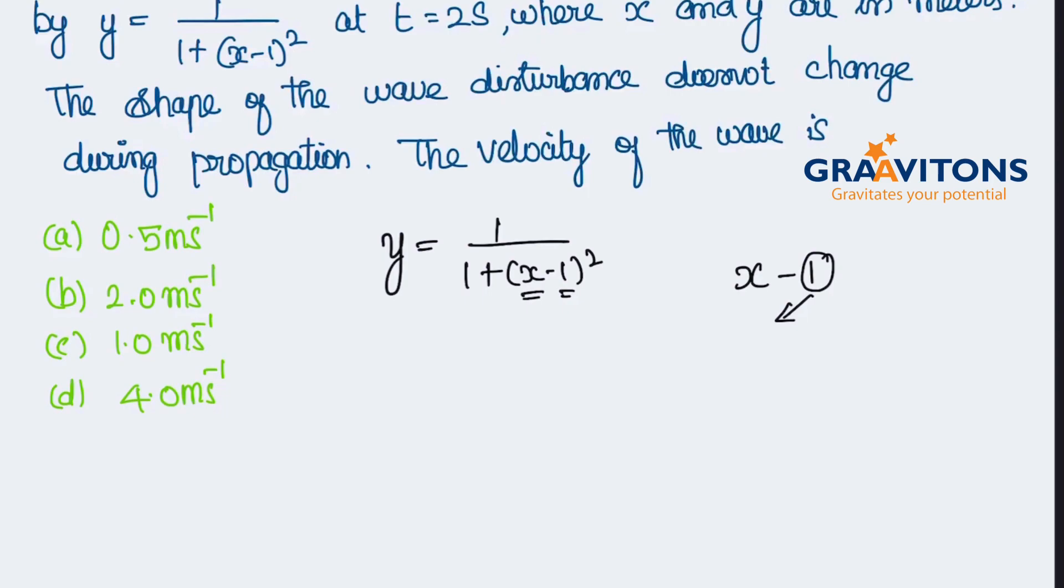Speed is equal to distance traveled divided by time taken. Distance is equal to speed into time. Here, the displacement of 1 is equal to v into t.